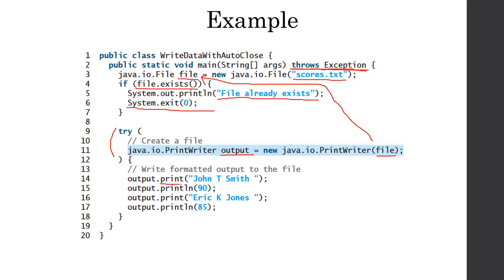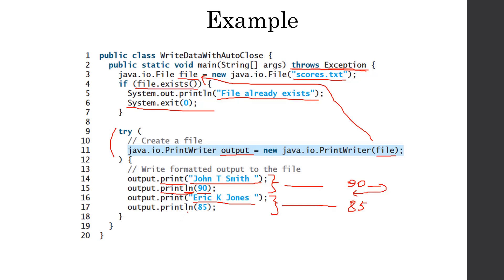Inside the try block, we create the PrintWriter object and specify the File object. Then we write some messages to the file. We use print() to write a string message, then println() to write 90 — println() writes the message and moves to the next line. So after these two lines, the file contains 'John T Smith' and then 90. The next message — 'Eric Jones' and 85 — is written on the next line because we used println().